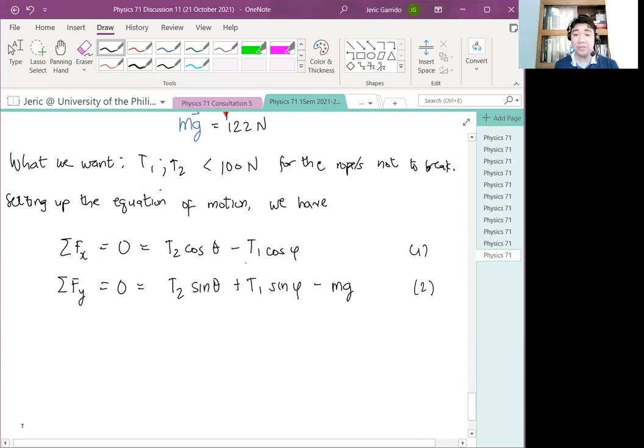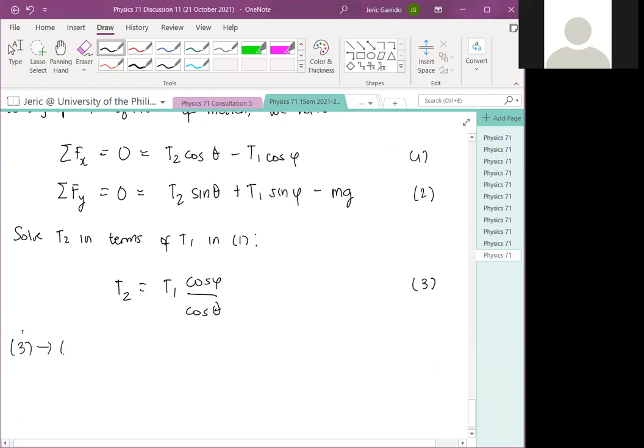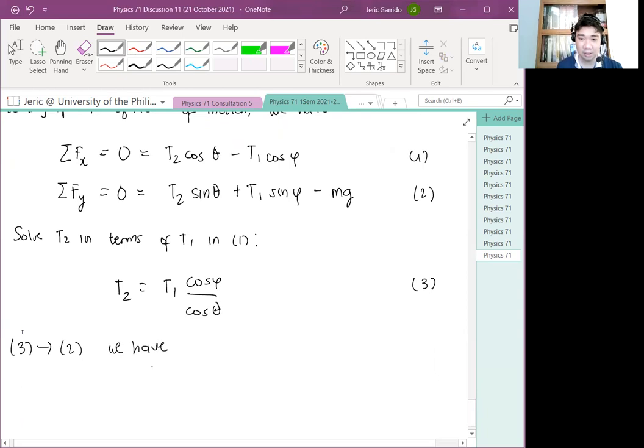Therefore, for the y direction, on the other hand, summation of forces acting on y is also zero, which is just equal to T2 sine theta plus T1 sine phi minus mg. This is equation 1 and this is equation 2. Ang gagawin ko, I'll solve, since both T1 and T2 are unknown, we need two equations. This will now satisfy the needs for two equations. And what I will do is to solve T2 in terms of T1 in equation 1. So we get something like T2 equals T1 cosine phi all over cosine theta. This is equation 3.